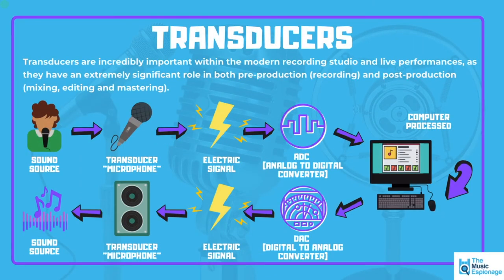In the case of the microphone, you have your sound source — say, a person singing — and we use the transducer, the microphone, to turn that sound source into an electric signal. This is then passed through an ADC, an analog-to-digital converter. We use a computer processor to record and store the information on a hard drive, using software like Logic, Reason, or Pro Tools to manipulate that recorded sound. When we want to play it back through the speaker, we use a DAC — a digital-to-analog converter — which changes it back to an electrical signal. The speaker is our second transducer, the mirror image of the microphone, turning electrical energy back into acoustic energy.